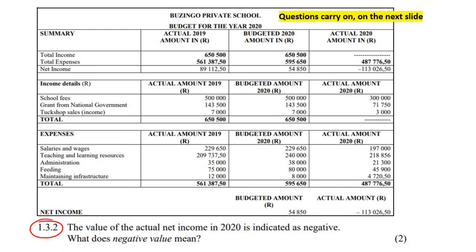The next question says: the value of the actual net income in 2020 is indicated as negative. Yes, it is. What does a negative value mean? It means that the school actually made a loss. So we can just say it means the school had a loss.